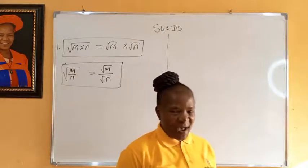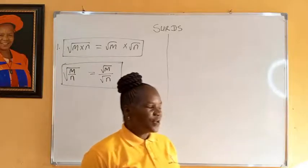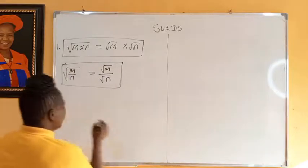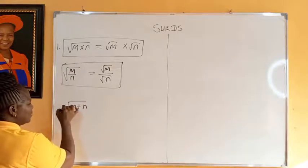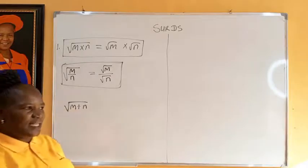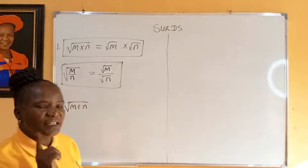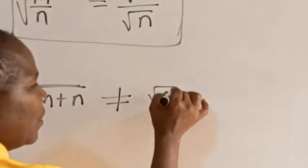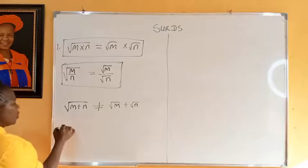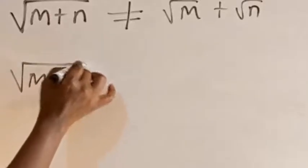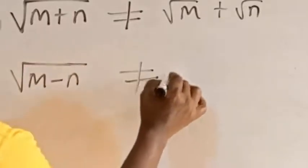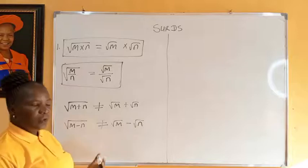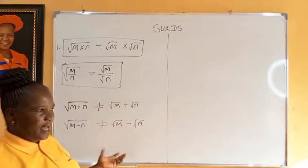It is good I give the following remarks because some students make mistakes while operating in the field of surds. You see people doing something like this: surd of (M plus N) — you see them saying it is equal to surd M plus surd N. It is not, please. Note that it is not equal to surd M plus surd N. Also, surd of (M minus N) is still not equal to surd M minus surd N.